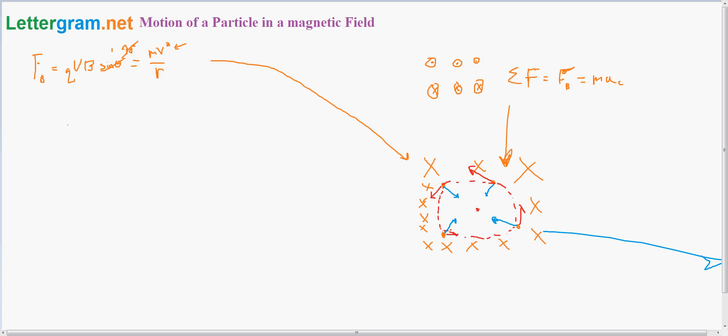Now we can solve for R, the radius of the circle. It has to be equal to the mass times velocity divided by the charge times the magnetic field. Setting these equal to each other and canceling, we get R = MV/(QB).